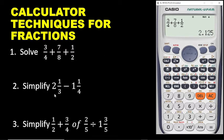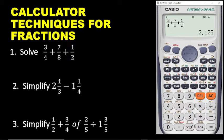Let's come to the second example: simplify 2 whole number 1 over 3 minus 1 whole number 1 over 4. Now remember, this is a mixed number, and you can still enter this on the calculator. Whenever you want to enter a mixed number on the calculator, first you must press shift and then you press the fraction key. So you are getting the mixed number template.